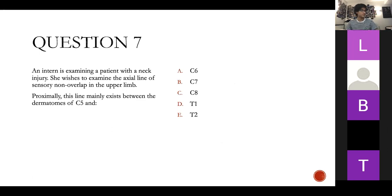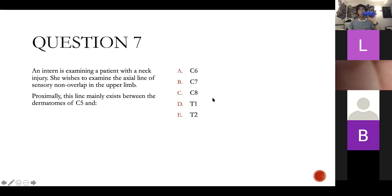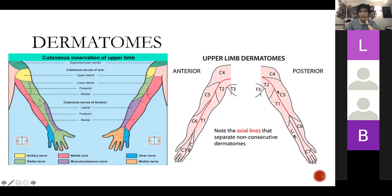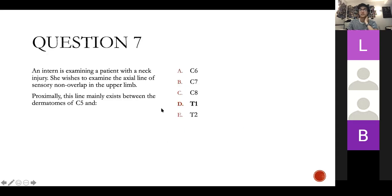Question seven: an intern wishes to examine the axial line of sensory non-overlap in the upper limb. This line mainly exists between the dermatomes of C5 and D — T1. There is a little overlap with T2, but mainly it's T1. Looking at the dermatome diagram, we can see that overlap with T1 is mainly on the back.